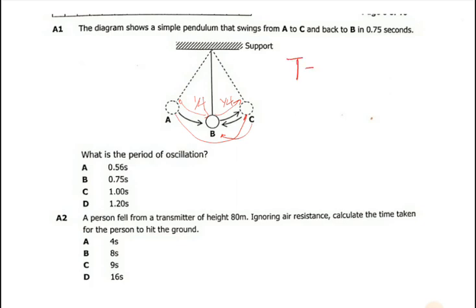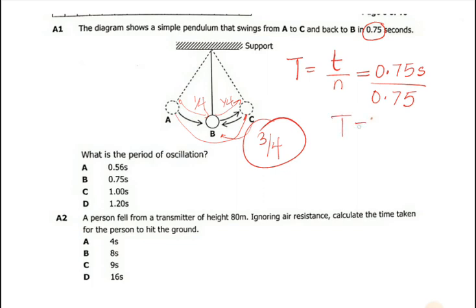Period is given by time taken over number of complete working oscillation. Time taken is this one here, 0.75 seconds, the number of complete oscillations that we just found was three quarters. So what is three quarters? Three quarters is just 0.75. We're going to put 0.75 here. So we divide, which will just give us a period of 1.00 seconds.